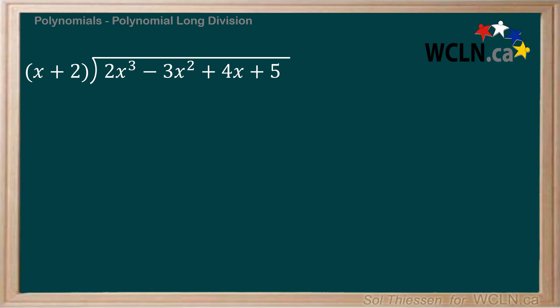The first thing to ask ourselves is what is 2x cubed divided by x? Note that we're not asking what is 2x cubed divided by x plus 2 — we're ignoring the constant term of plus 2 for now. This is a key difference that comes up in polynomial long division. In other words, we're looking for something that we can multiply x by in order to get 2x cubed. The answer is 2x squared, which we write on top of the long division sign.